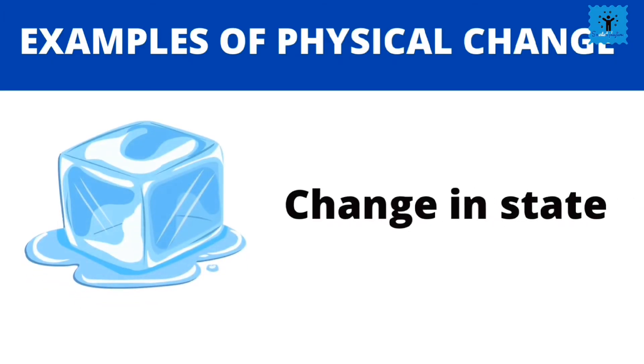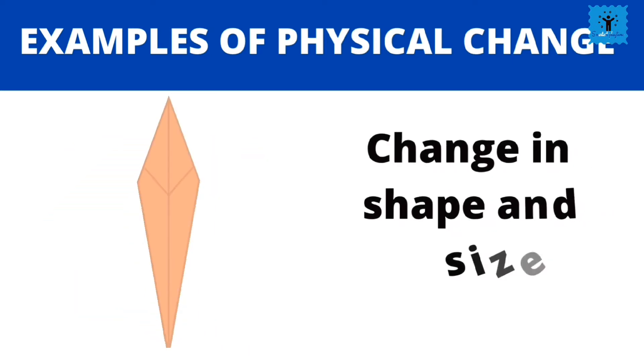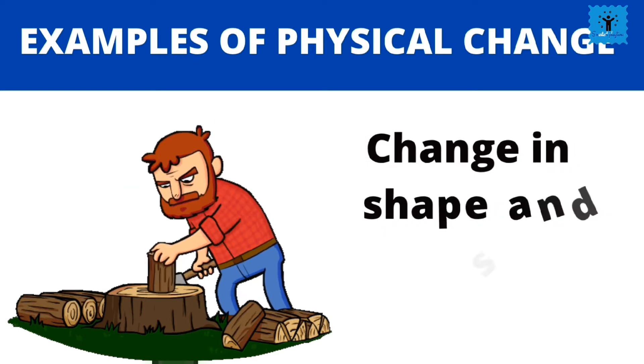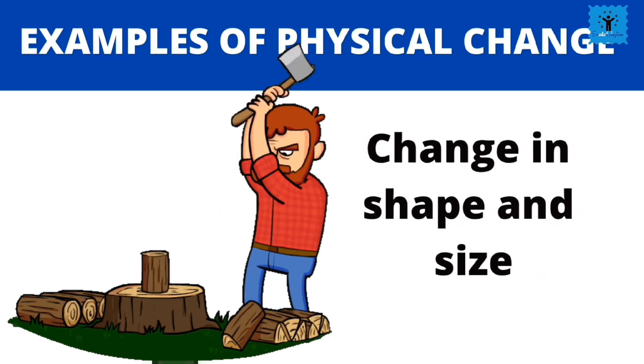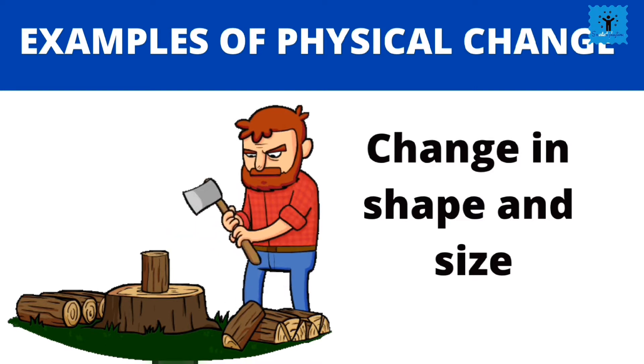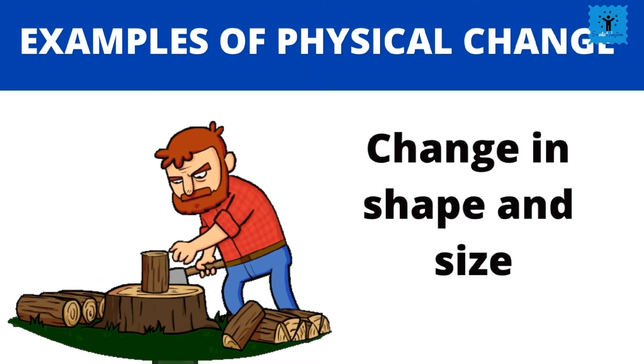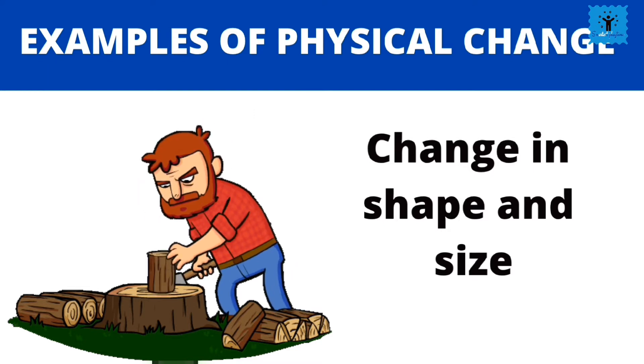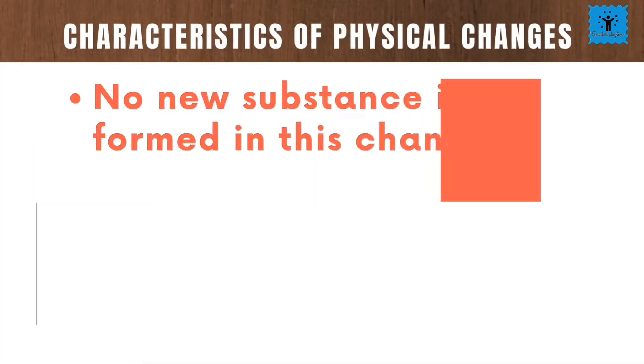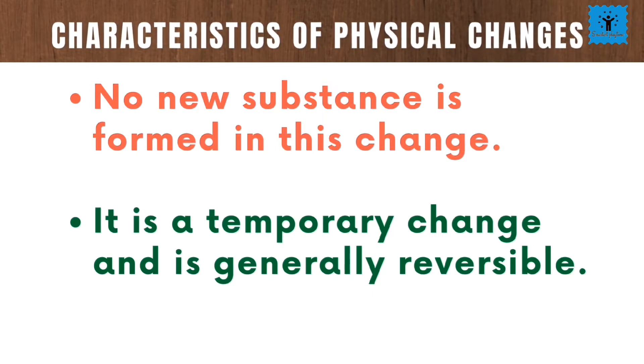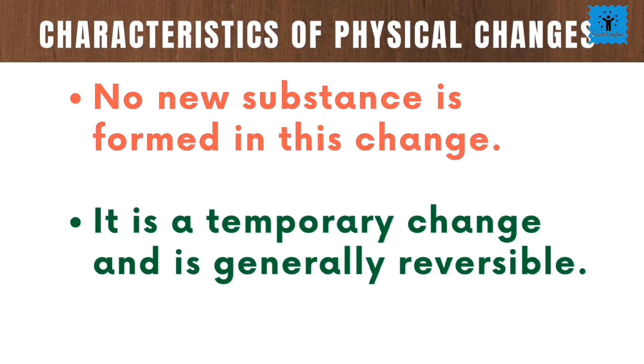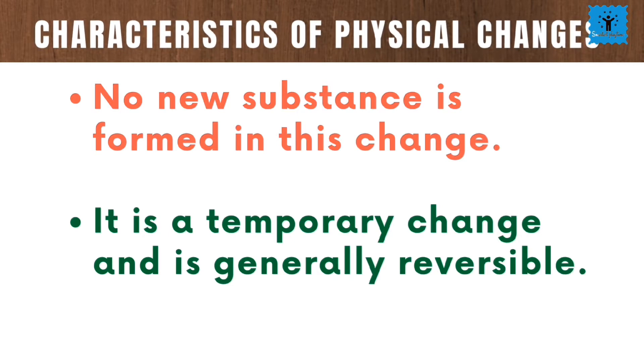Melting of ice cube is a physical change because there is a change in the state of water from solid to liquid. When we fold a paper, there is a change in the shape and size of the paper. Chopping wood is also an example of physical change because there is a change in the shape and size of the logs. So from these examples we noticed some important characteristics of physical changes. In physical change, no new substance is formed. These changes are temporary and these are generally reversible.